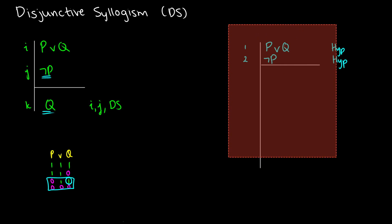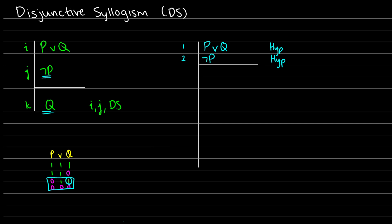Let's do the proof of this. We need to prove q. What I have is p or q. When I have p or q, I want to assume p, assume q, and try to get or-elimination working. So in line three, I'm going to assume p — this is a hypothesis for or-elimination. And in both of our hypotheses for p and q, we're just trying to get q out of it. I'm not quite sure how to get q out of this directly, so I'm going to assume not q — making another assumption for contradiction for RAA.